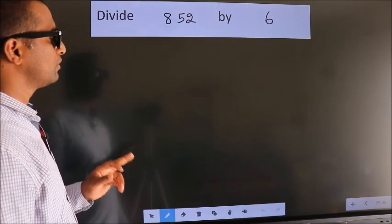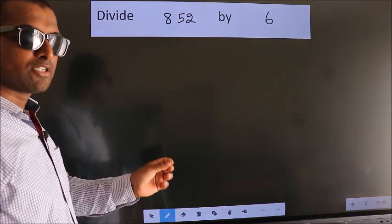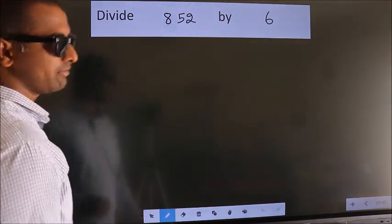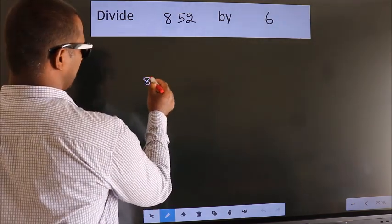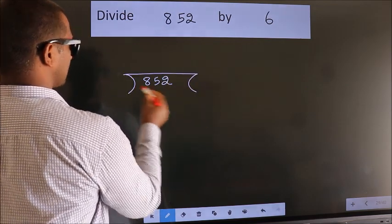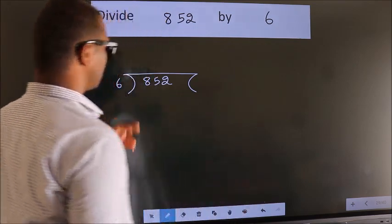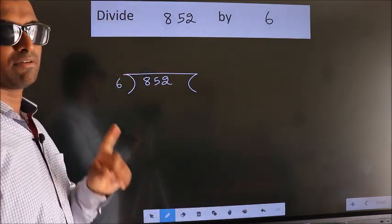Divide 852 by 6. To do this division, we should frame it in this way. 852 here, 6 here. This is your step 1.